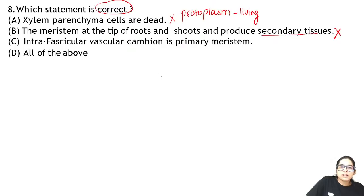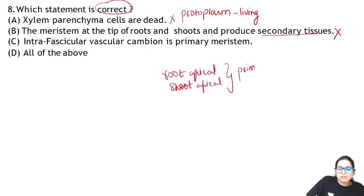Root apical meristem and shoot apical meristem produce primary tissues. So the correct answer is C — intra-fascicular cambium is primary meristem.